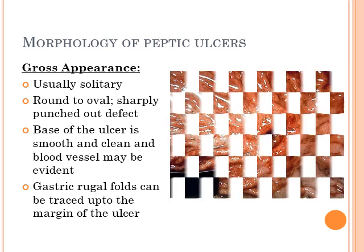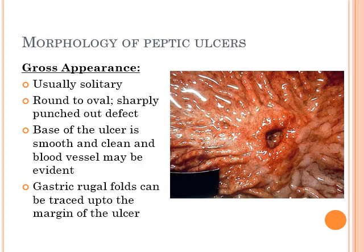Coming to the morphology of peptic ulcers: they are usually solitary. Looking at the picture, these are round to oval, sharply punched-out defects. The base of the ulcer is smooth and clean, and a small blood vessel may be evident. The gastric rugal folds can be traced up to the margin of the ulcer. This gross morphology is important because you have to differentiate this benign ulcer from a malignant gastric ulcer.